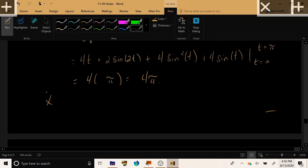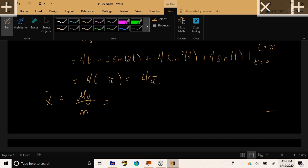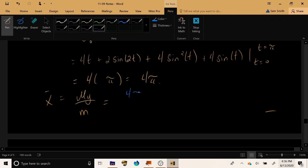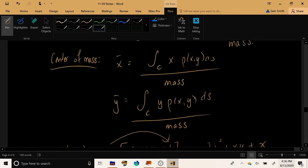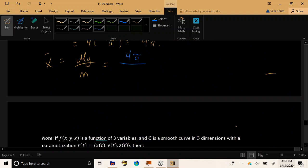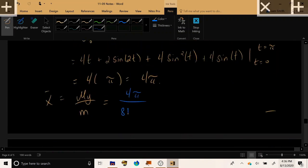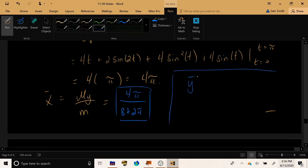And that would mean that x bar, for example, which is the moment around the y axis divided by the total mass, could be found by taking 4 pi the moment around the y axis and dividing it by this total mass that we found in the previous calculation, which was 8 plus 2 pi. You can reduce this if you want but it doesn't matter too much. This is, for example how we would find x bar and then I will leave y bar to you as an exercise because it's very similar to what we just did and I don't want to waste your time doing something that's too redundant.